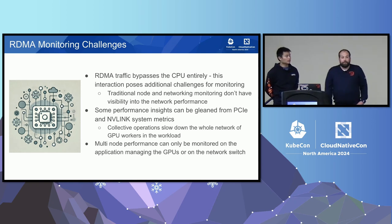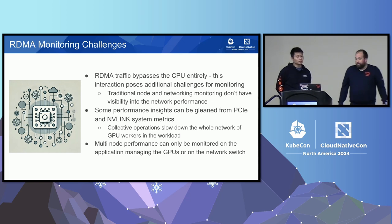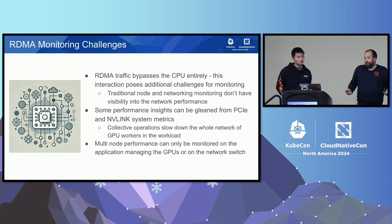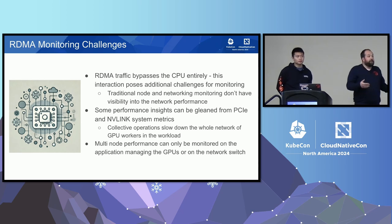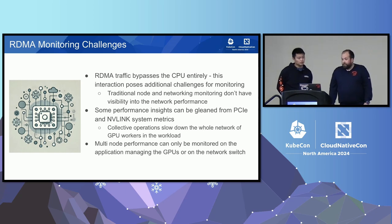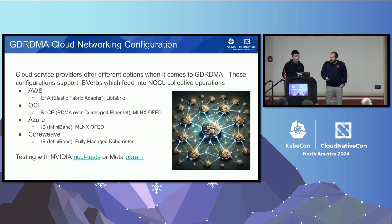Some performance insights can be gleaned from PCIe or NVLink metrics. The problem with multi-node runs is that collective operations slow down the whole mesh of GPUs. Furthermore, these metrics do not isolate single versus multi-node — PCIe could have stuff traversing the internal board, making it hard to decipher what's happening on the RDMA network. Inter- or multi-node performance can only really be monitored on the application or on the network switch, but in a public cloud environment you don't have access to the network switch information.